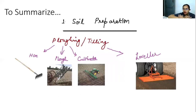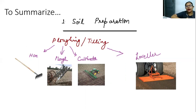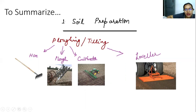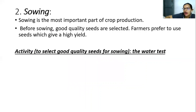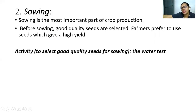To summarize soil preparation: the process of preparing the soil for cultivation is done by ploughing or tilling. The different tools used are the hoe, plough, and cultivator, and we also use a leveller to make the field level. This makes it easy for the farmers to sow the seeds. The second step in agricultural practice is sowing, which is the most important part of crop production. If you don't sow the seeds, you are not going to get any crop.